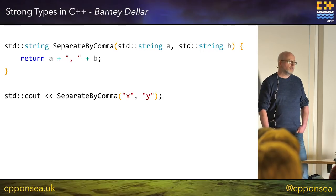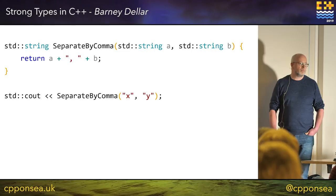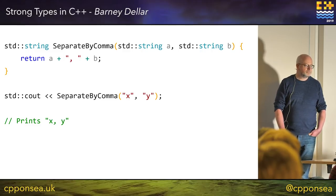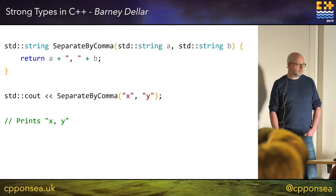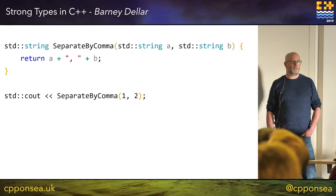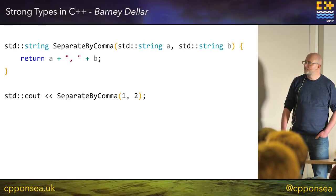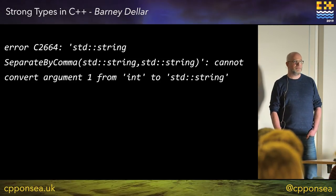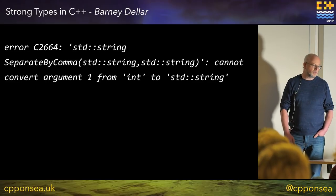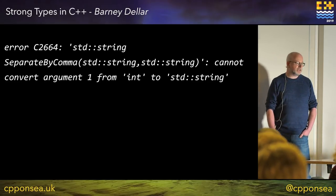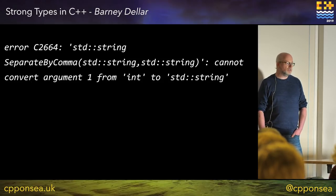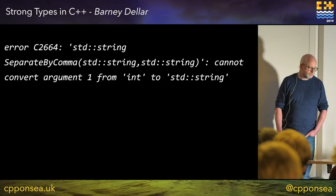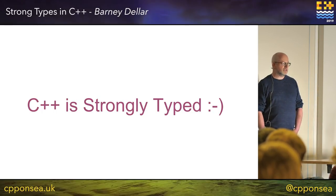Here we have a function that takes in two parameters, but this time they are two strings. We add them together with a comma in between them, and then the function also returns a string. And if we call it as before, we get 'x comma y'. But what happens if we try and pass in integers this time? Does anyone know what happens? It does not compile — we get a compilation error. You can't run this code. The program is ill-formed and cannot be compiled. So the compiler has added a level of testing to our code, meaning that we don't need to remember the meaning of the API. It's encoded in a way that the machine understands. C++ is a strongly typed language.